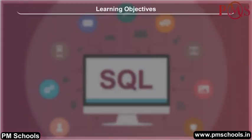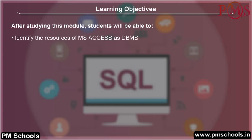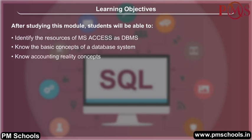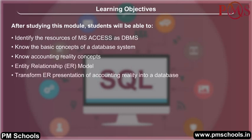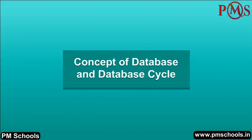Learning Objectives: After studying this module, students will be able to identify the resources of MS Access as DBMS, know the basic concepts of a database system, know accounting reality concepts, understand the Entity Relationship or ER model, transform ER presentation of accounting reality into a database, and develop database design for a computerized system using the relational data model, as well as retrieve accounting data and information using queries.